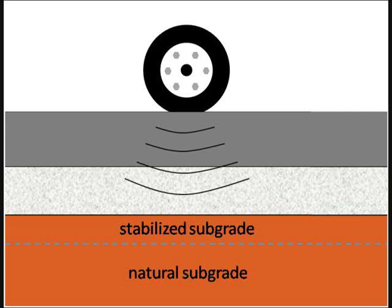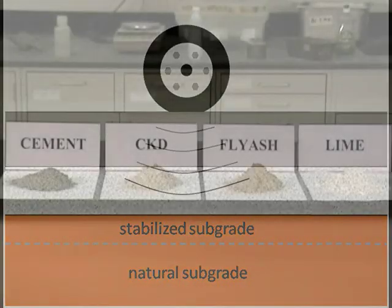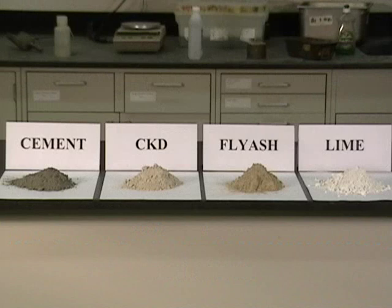The most common material used for stabilizing a highway subgrade composed of clay is lime. Cement and Class C fly ash are also widely used, particularly if the subgrade contains higher fractions of silt and sand and for smaller projects.